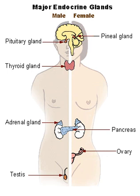Hormones can consist of either amino acid complexes, steroids, eicosanoids, leukotrienes, or prostaglandins.